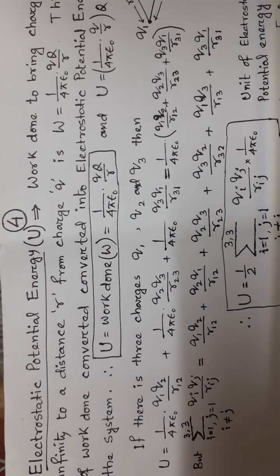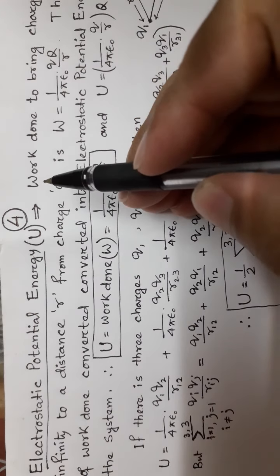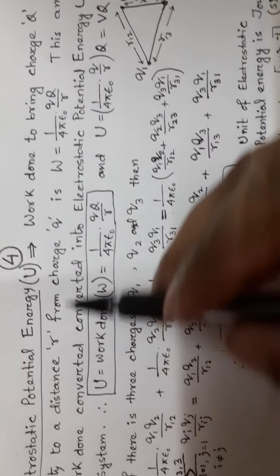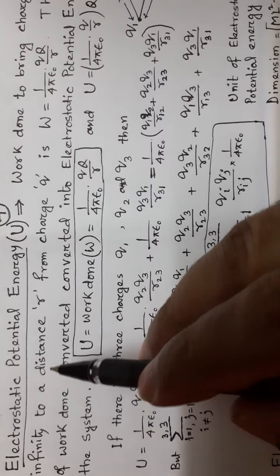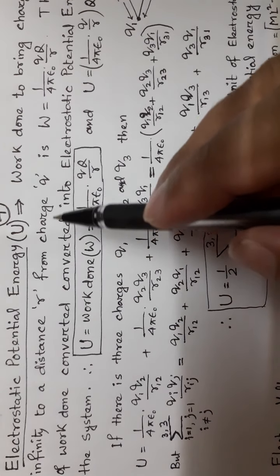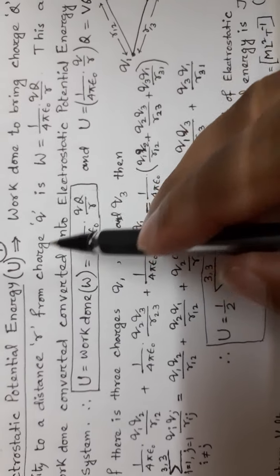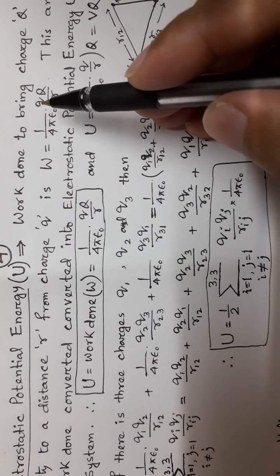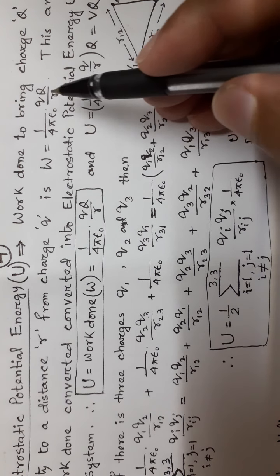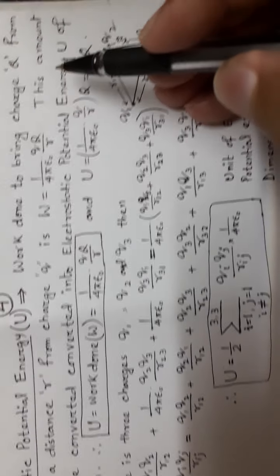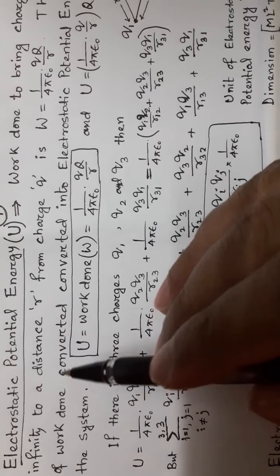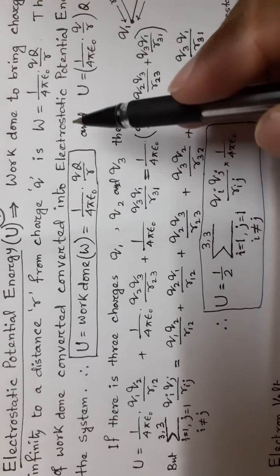Electrostatic potential energy is defined by the work done to bring charge Q from infinite distance to R in front of charge Q. This amount of work done is converted into electrostatic potential energy of the system.